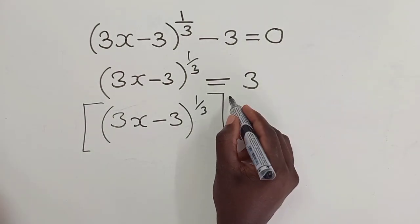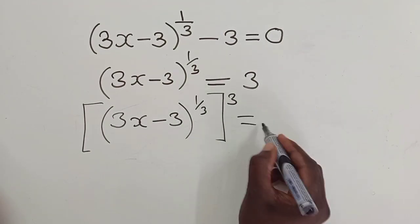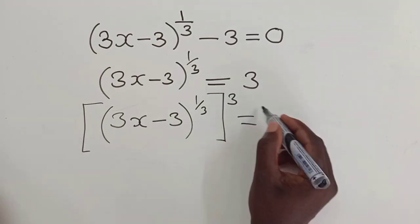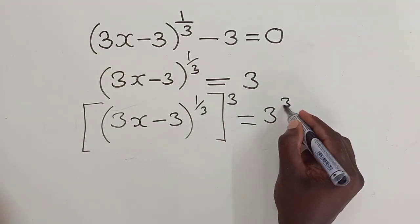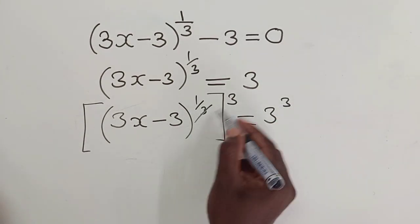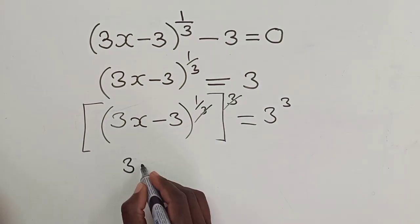We will raise it, or we will put power 3 outside here, and the other side also power 3, such that this 3 and this one will cancel, so we'll remain with 3X minus 3 is equal to 27.